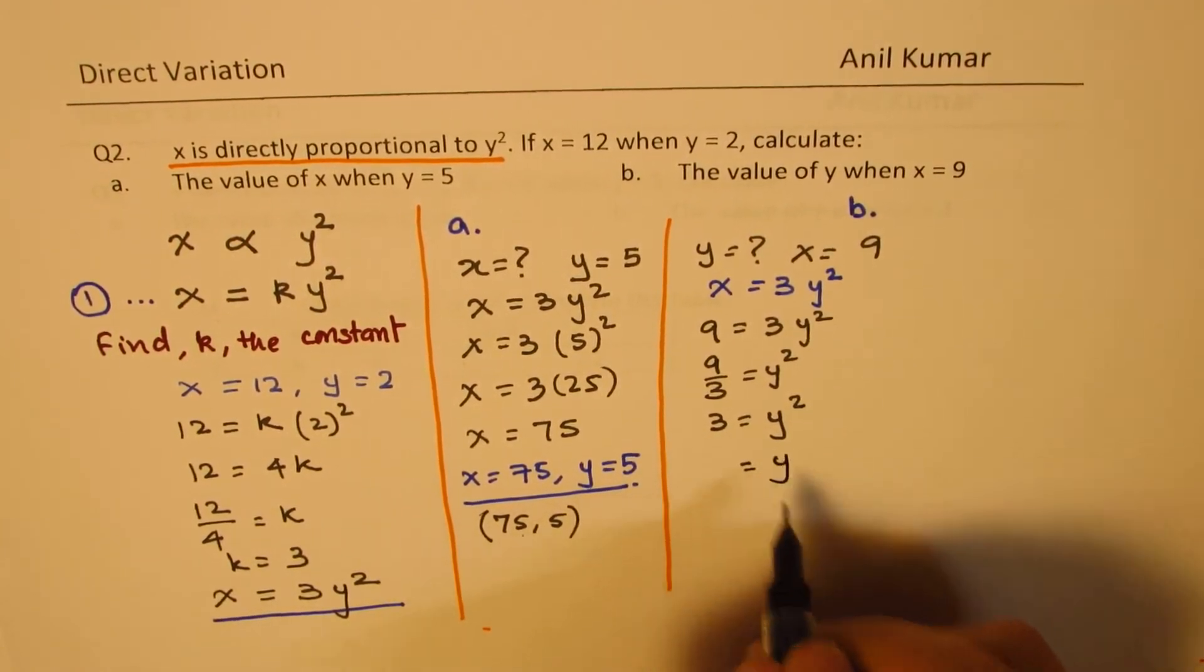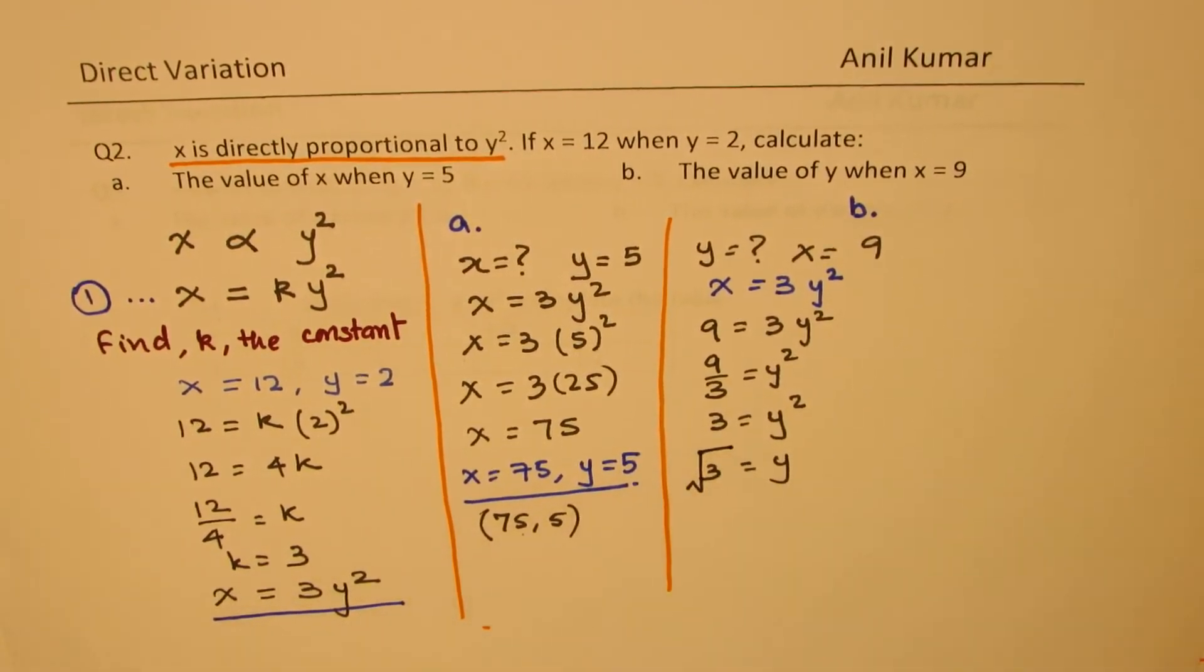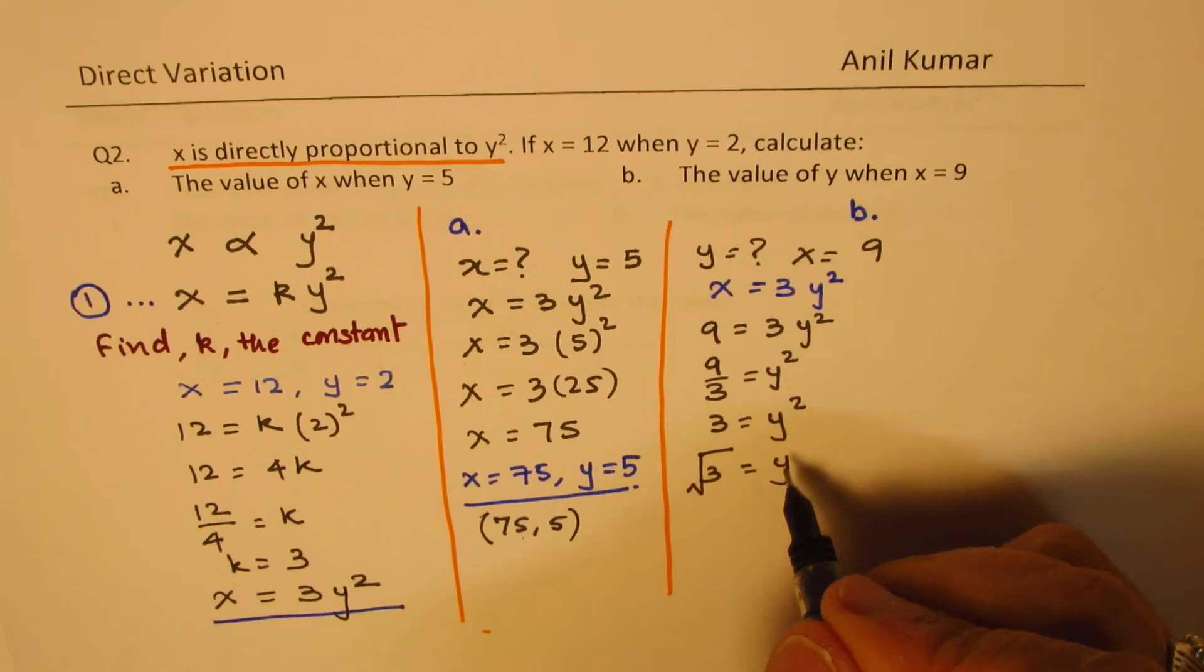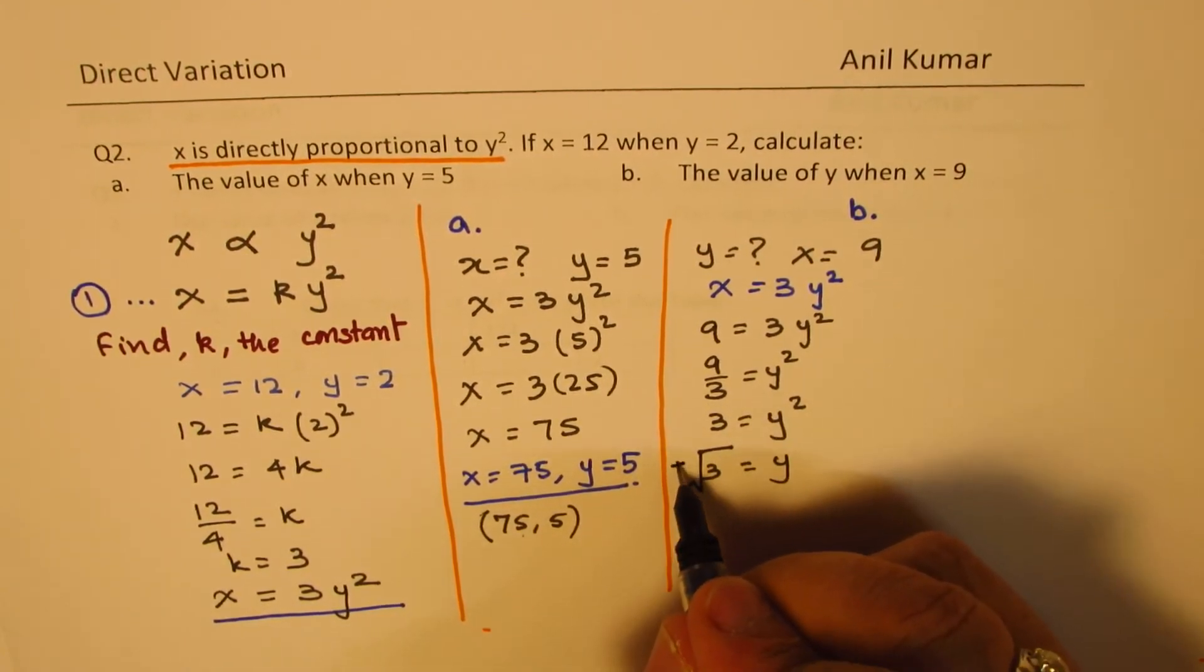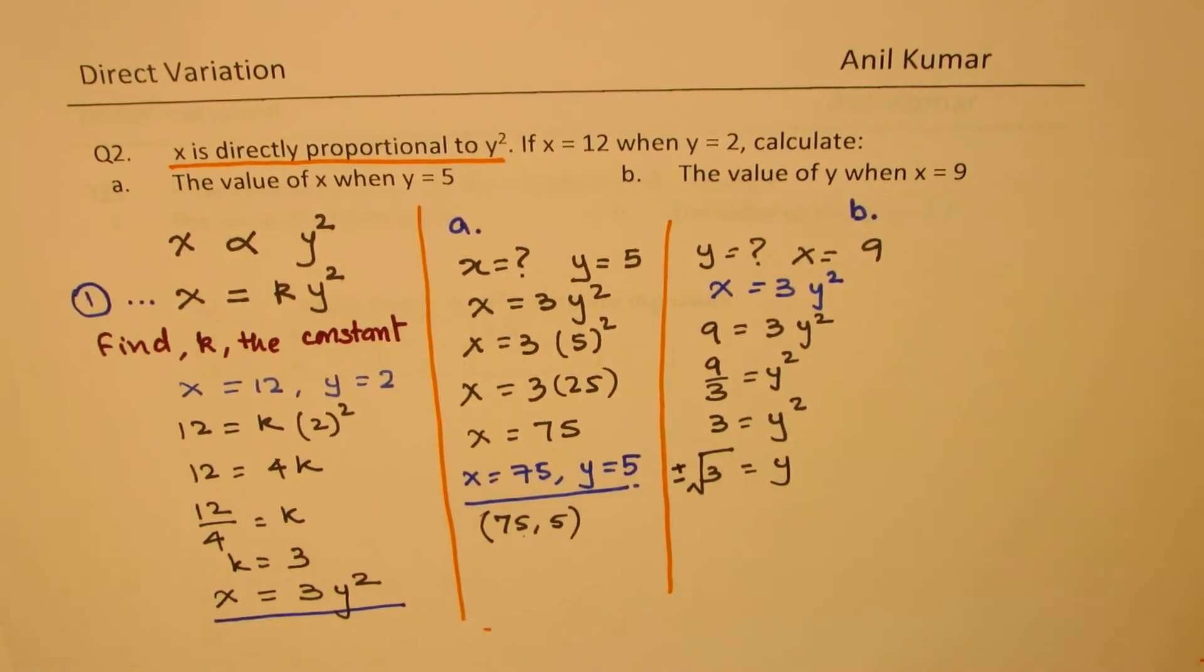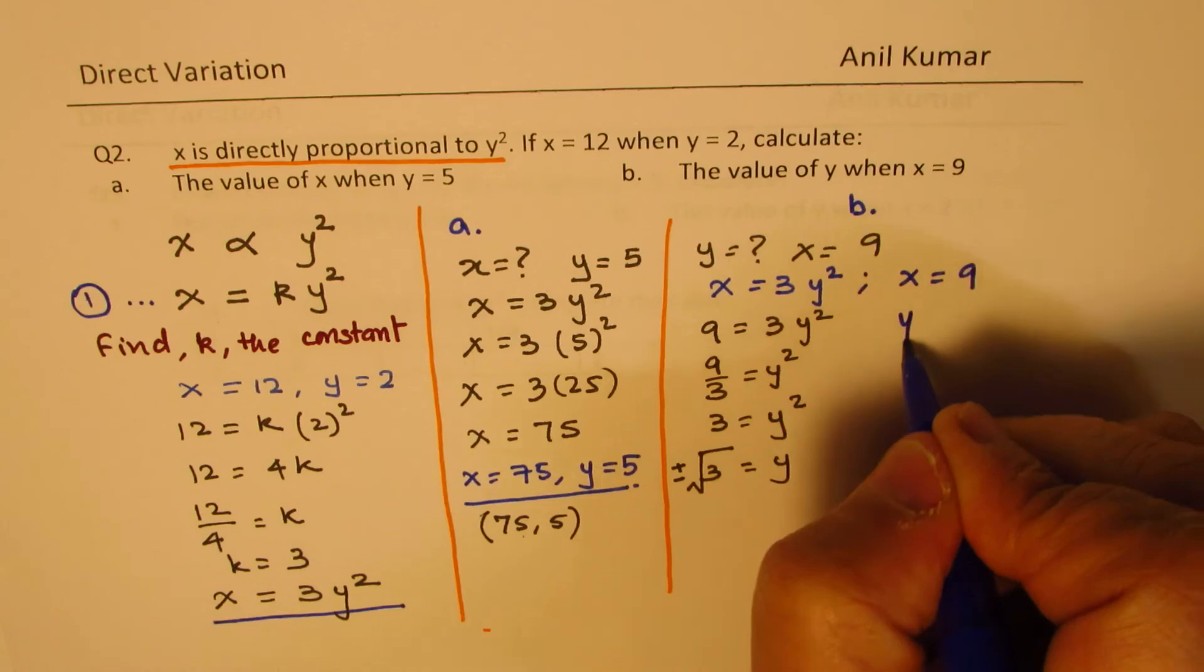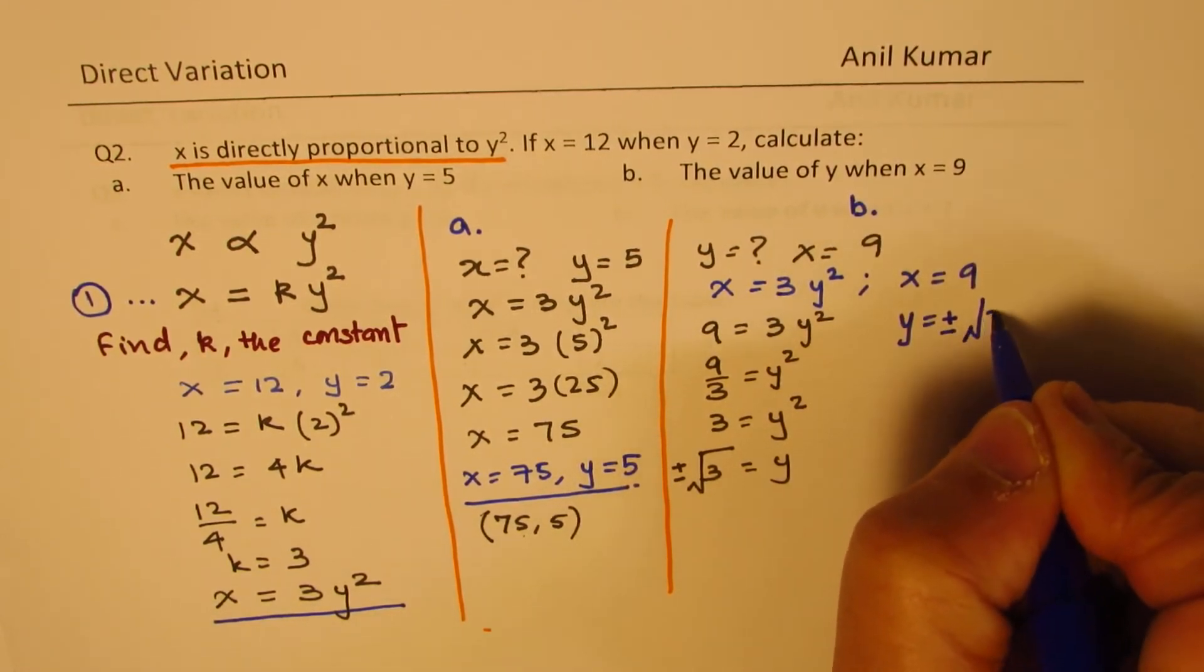Now what is y equals to? Of course square root of 3. Now the question is should I take plus or minus or not? Well minus square root 3 squared is also 3. So we have to take the value plus and minus. So in this case we have two solutions. So we can say that when x equals to 9, y equals to plus or minus square root of 3.